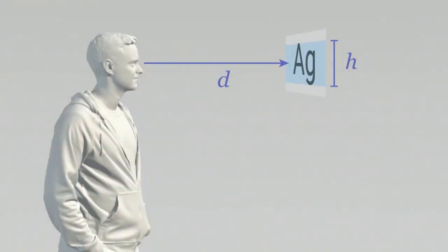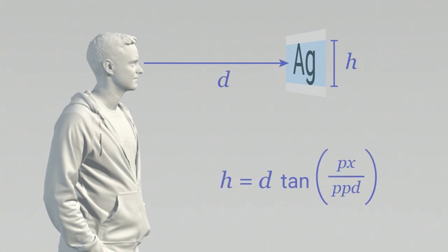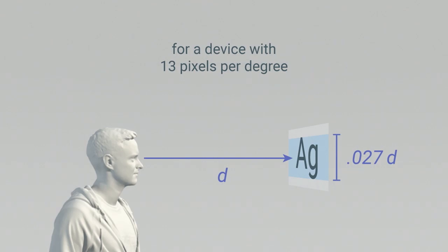In a game engine, you don't think in pixels — you measure in meters and millimeters. You can figure out text height in the game engine as a relationship between the distance to the virtual text, the number of pixels tall you want it, and the pixels per degree of the device. For text 20 pixels high on a device with 13 pixels per degree, take the distance to the text and multiply by 0.027 to get its starting height — about 1.5 degrees tall. Or simply take the distance and multiply by 0.027 and look at it in the headset.